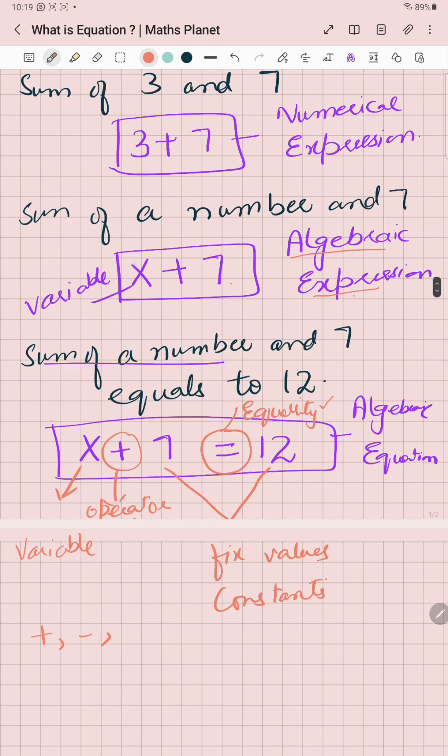And what is a variable? Any term which is unknown is known as a variable, and the fixed terms are known as constants.